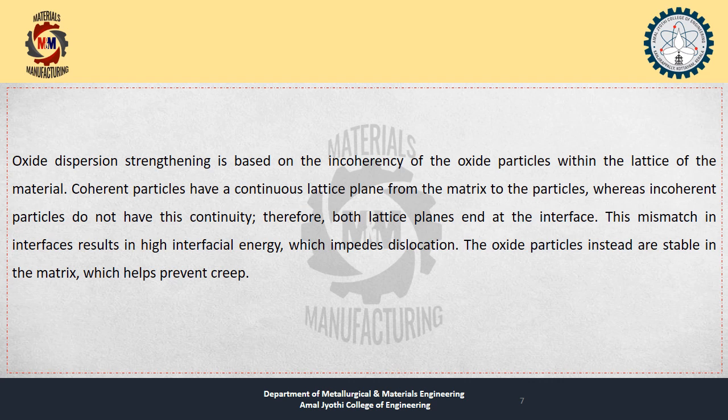In addition to the obstacle effect of the oxide particles, the presence of oxide nanoparticles may also modify the material's mechanical properties in other ways. For example, the oxide particles may interact with the material's crystal structure in a way that increases the material's resistance to deformation. The exact mechanism by which oxide dispersion strengthening occurs may depend on the specific material and the oxide being used.